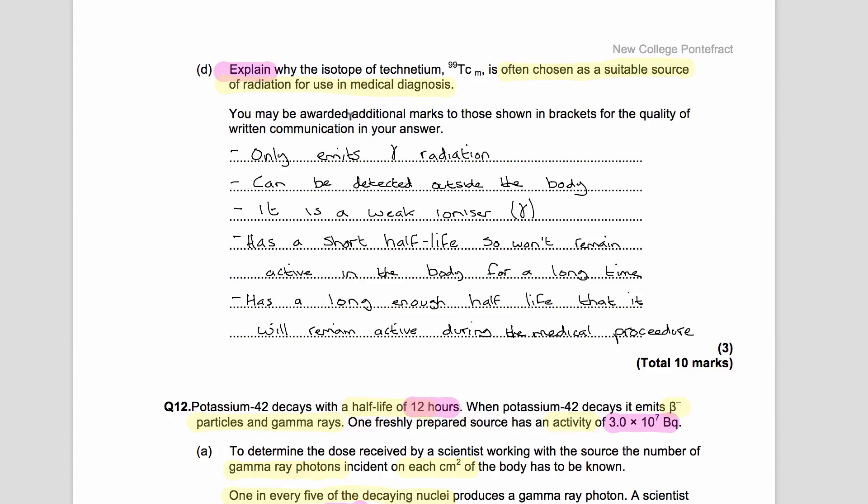So the reason it's used in medical diagnosis is because it only emits gamma radiation, it doesn't emit alpha and beta, which are really really ionizing. You can detect it outside of your body, it doesn't ionize very much because it's gamma. Technetium's got a fairly short half-life, so it doesn't remain in the body for a long time, and it has a long enough half-life that it remains active during the medical procedure. So these two things are things that if you really went into detail and did lots of revision, you would know. But the three main ones, the three easiest ones to remember, provided you remember this is a gamma emitter, then these three things follow naturally. So you basically have one mark for any of these five points, up to a maximum of three.